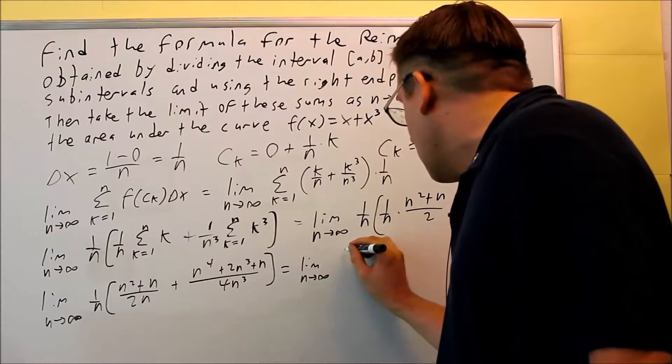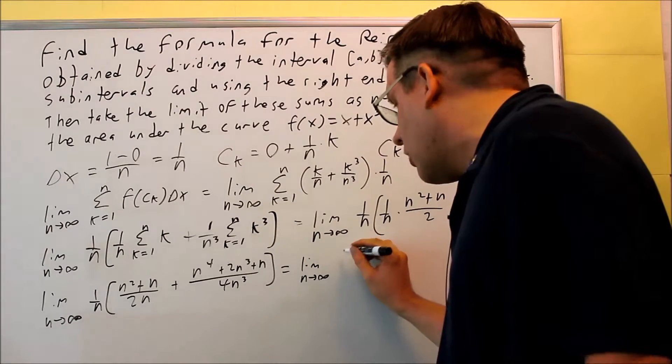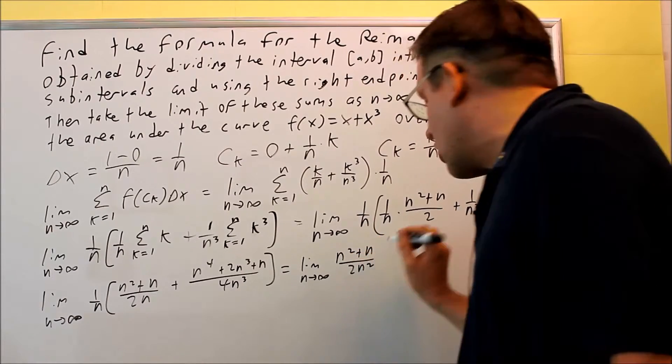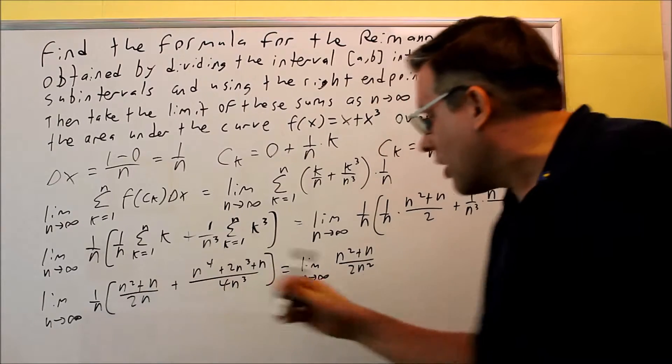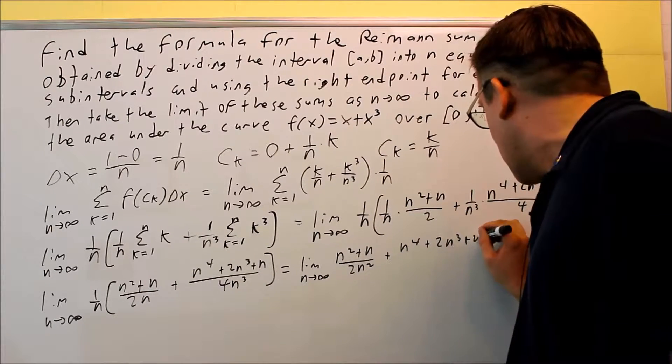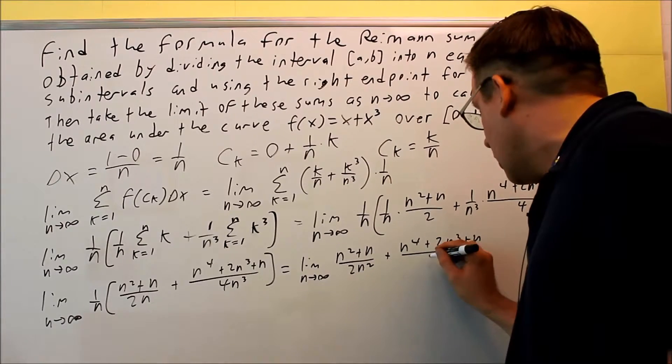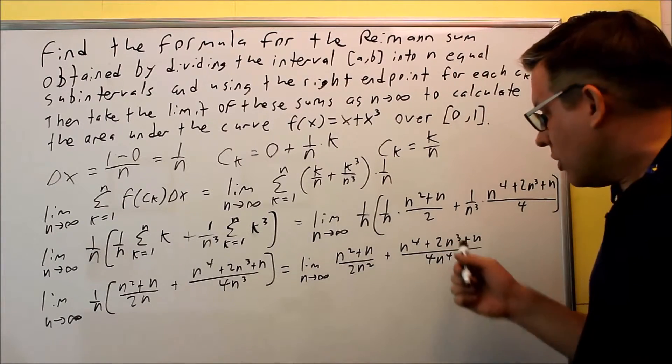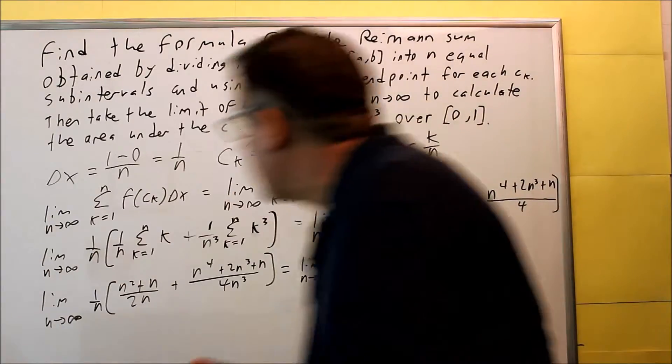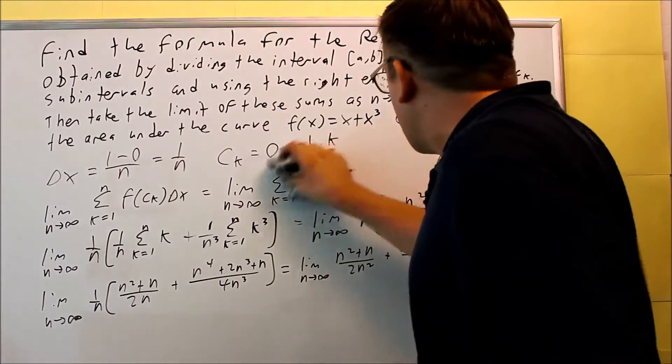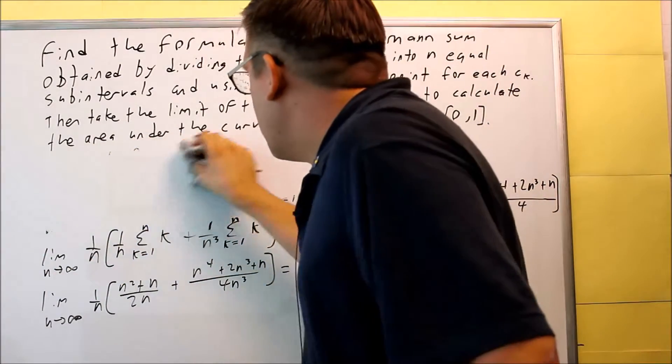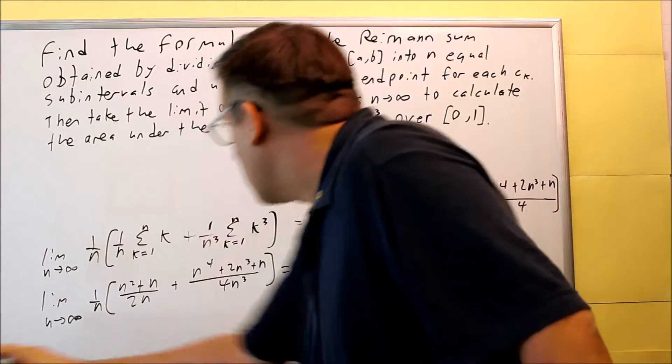So I'm going to do limit as n goes to infinity. And on the inside, I have n squared plus n over 2n squared there. So I'm distributing that. And then I have plus n to the fourth plus 2n cubed plus n. All that's going to be over 4n to the fourth power. So now I've expanded all that out. And the next thing I want to do is break it up further. So that way I can apply limit rules to that to solve it.